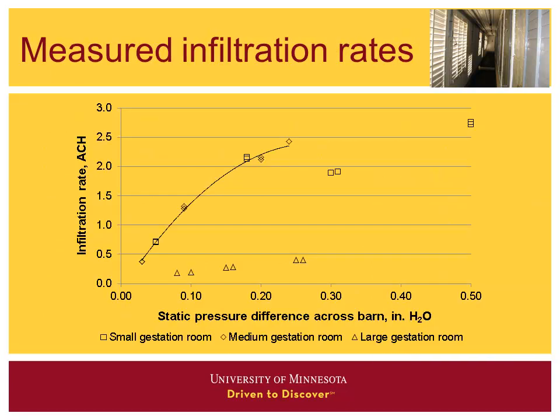Here's some of the data for those barns. There are diamonds and squares. The squares were a small gestation room of about 240 sows. A medium gestation room had about 3,000 sows, and then the large one had 5,000. The large gestation room was a very tight building, and we chose not to use that data for our analysis. The line shown is a polynomial that best fits the data for the 3,000-sow barn, and that's the relationship we're using between static pressure and infiltration rate in the model.